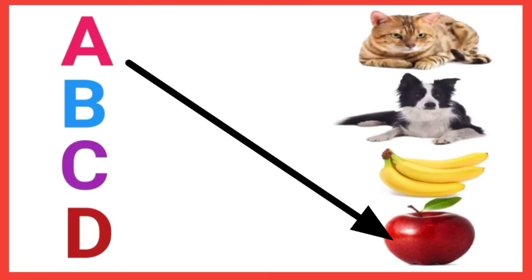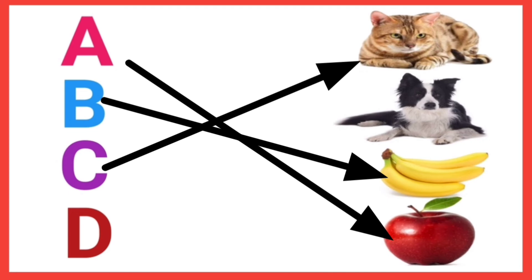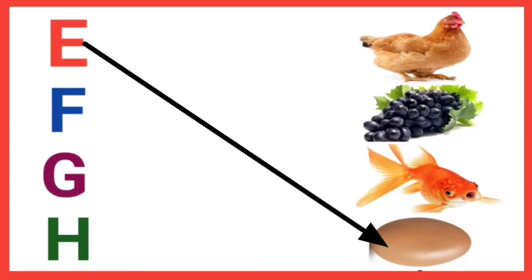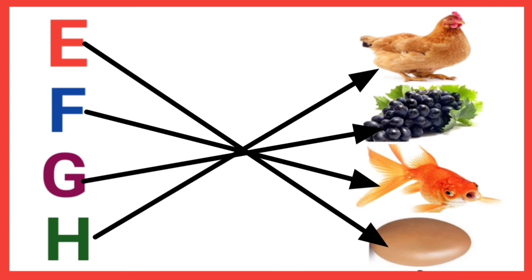A for apple, B for banana, C for cat, D for dog, E for egg, F for fish, G for grapes, H for hen.